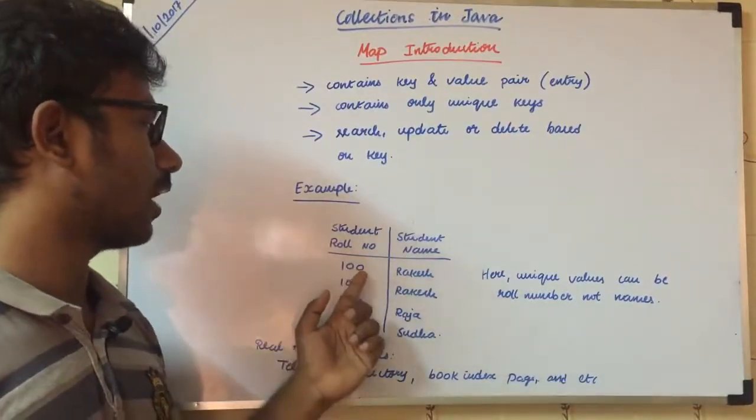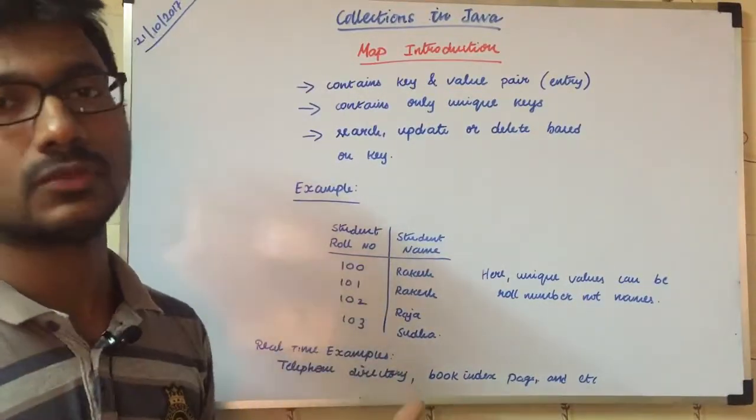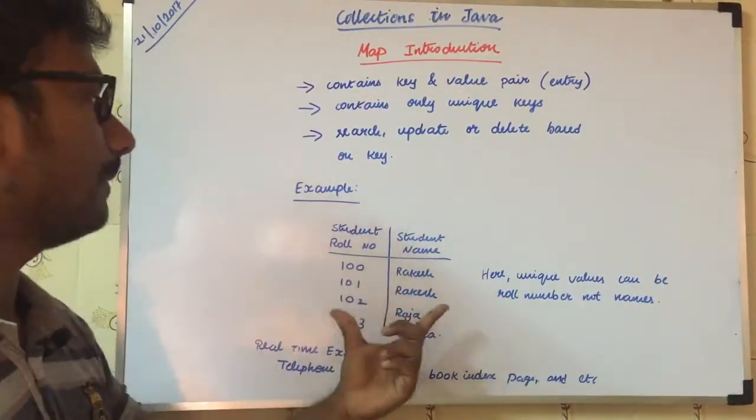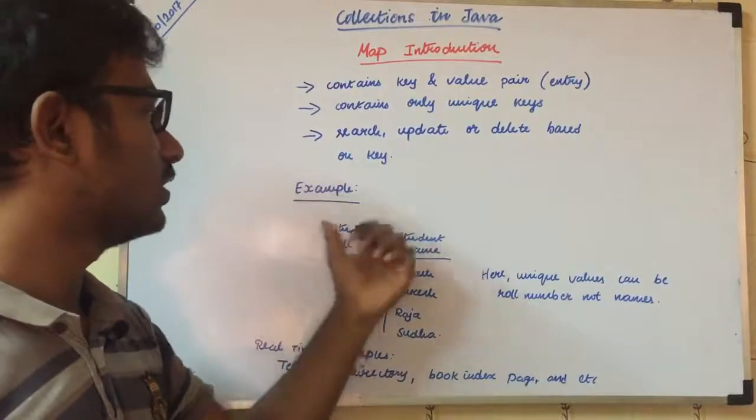Suppose the same number 100 repeats 102 times, it is not possible. One student has one unique roll number. So this is the best example. Actually, this is how Map works with unique keys.